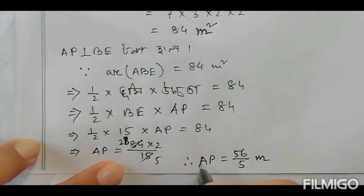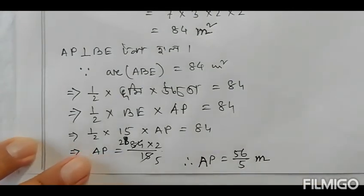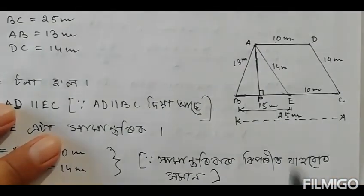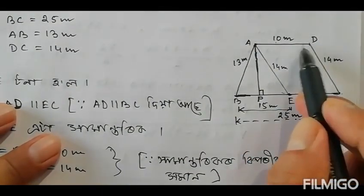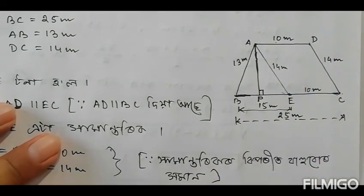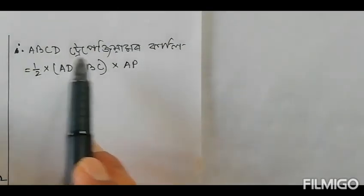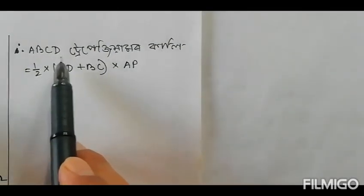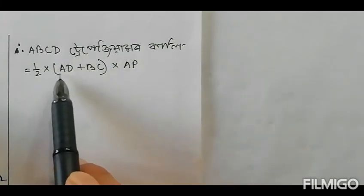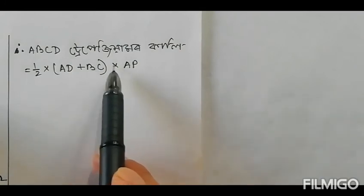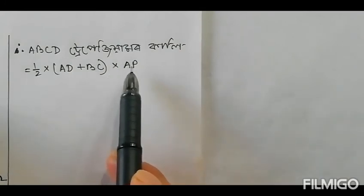So AP is equal to 56/5 meters. This is the height of the trapezium. AP is the perpendicular height, which is approximately 11.2 meters, and we will use this to compute the final area.